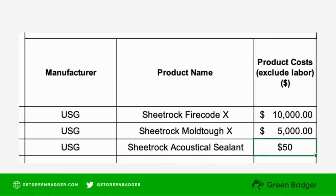The LEED cover sheet asks what products you're using, who manufactures those products, and what is the estimated cost of each product. The cost is the material cost only — fabrication and installation labor are excluded.